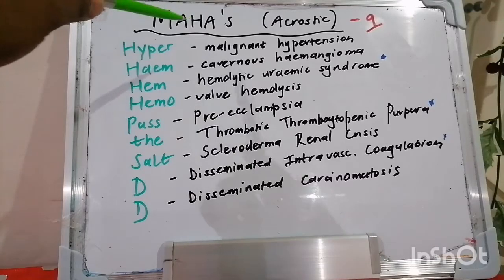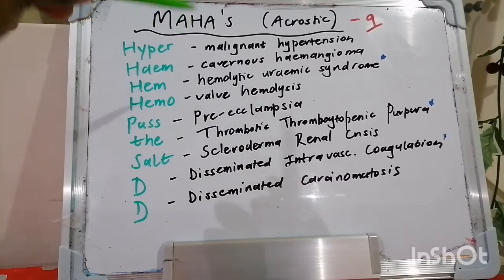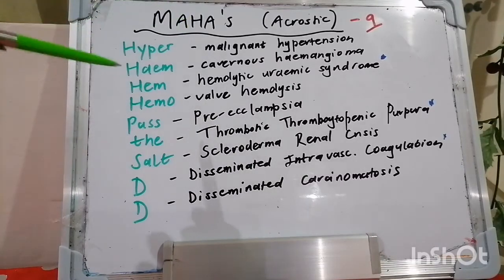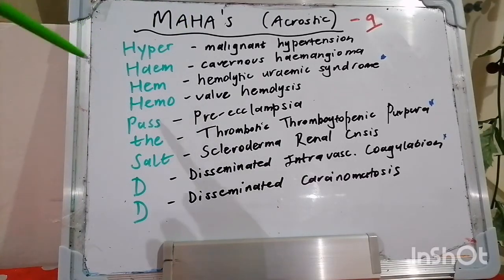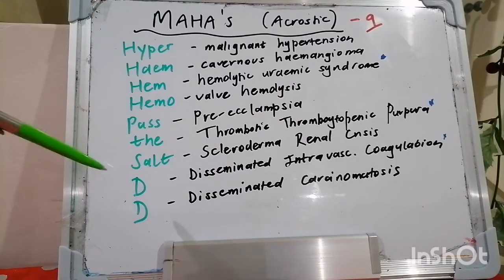As the MAHA, we have a nice little acrostic which goes: HYPER, HIM, HIM, HEMO, PASS, THE, SALT, DD.